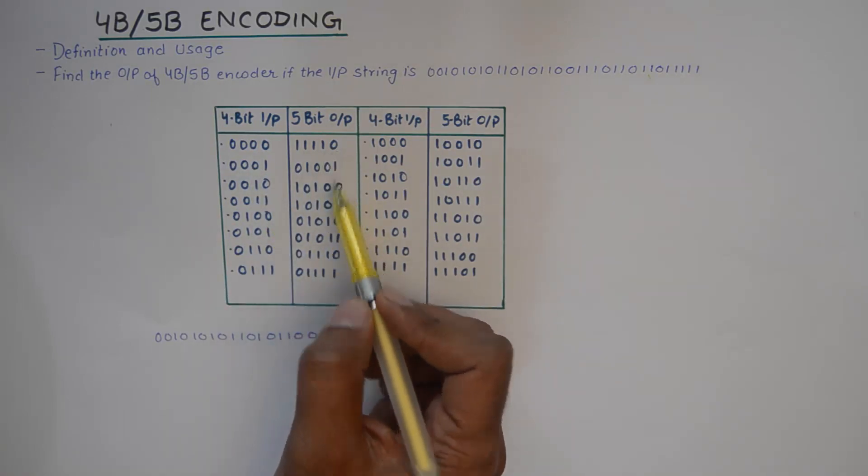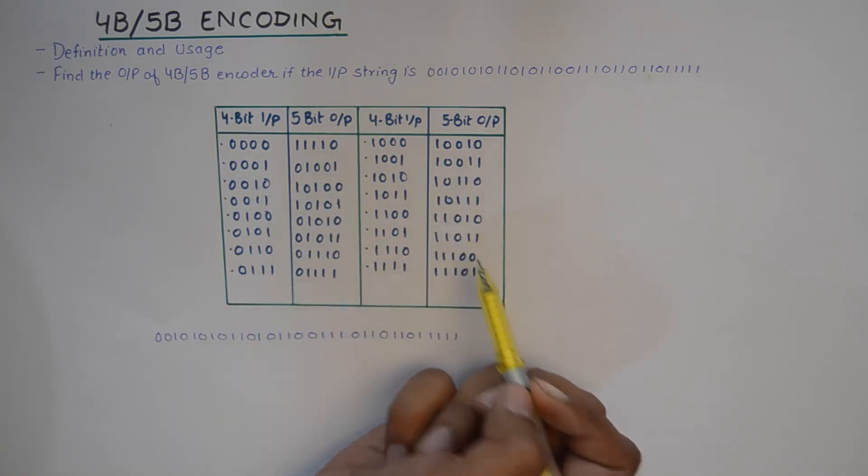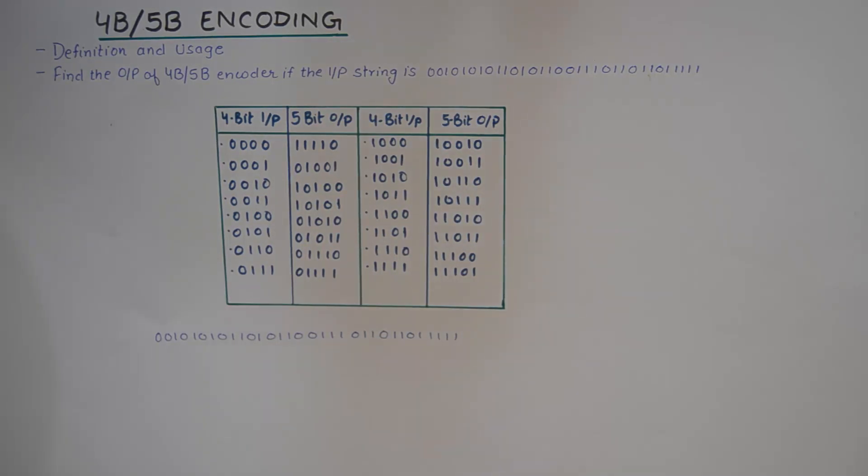the output is uniquely defined as in the table. Now this table is taken from Wikipedia. I do not know the rationale behind generation of the output of the encoder,